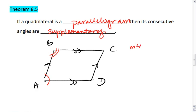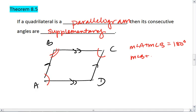So the measure of angle A plus the measure of angle B equals 180. We also know that B is supplementary to C. Measure of angle B plus measure of angle C equals 180.